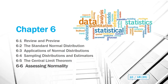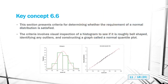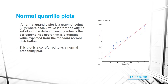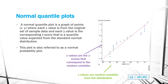The final section in chapter 6 is about assessing normality. We're going to look at criteria for determining whether the requirement of a normal distribution is satisfied — something we touched on back in chapter 2 when learning about histograms. A normal quantile plot graphs each x value from the original dataset against its corresponding z-score as the y value. This plot is also referred to as a normal probability plot.